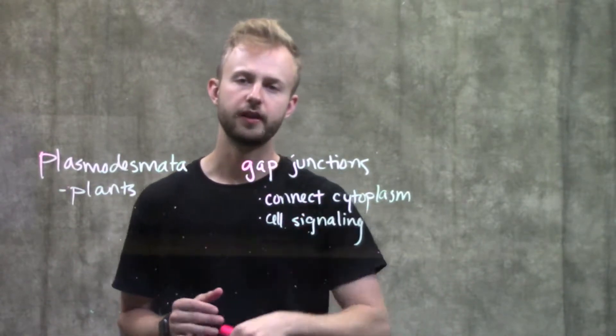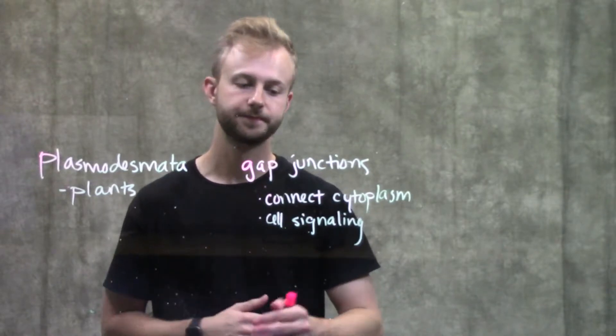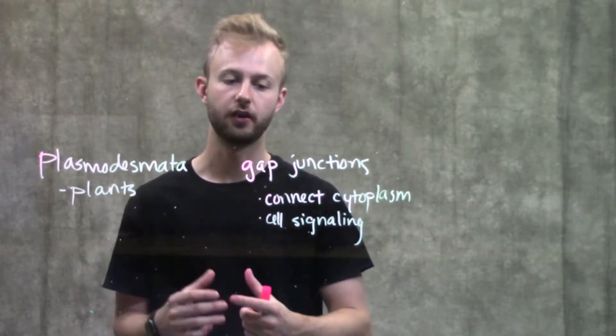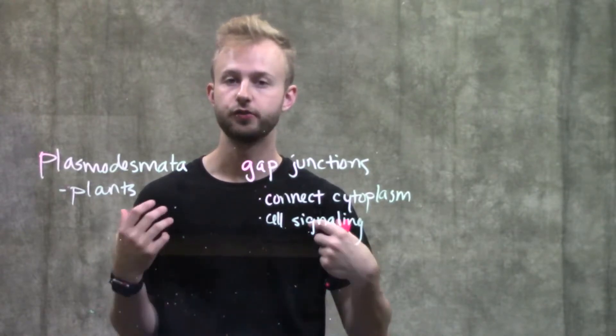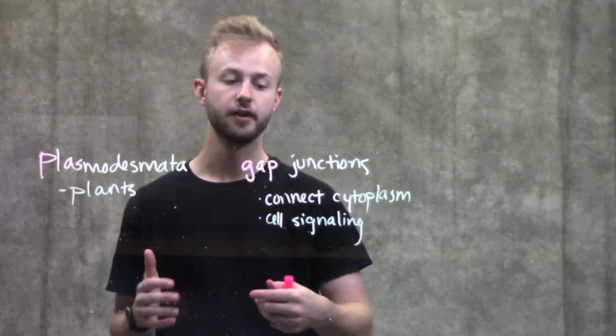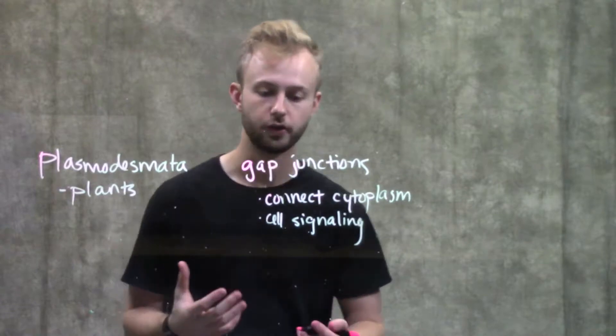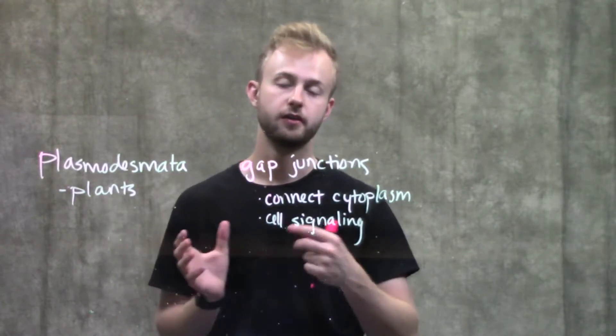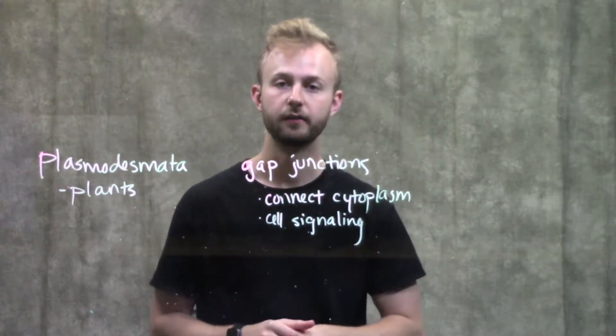This is really important in muscle contractions. Certain kinds of muscles use gap junctions to communicate the electrical impulse to actually make those cells contract, so they're really important not only in that but also with cell signaling.